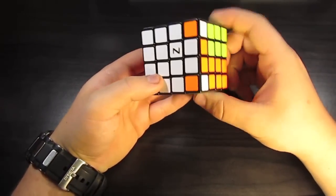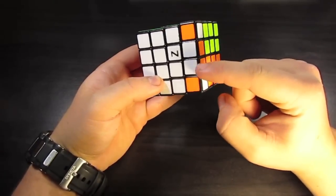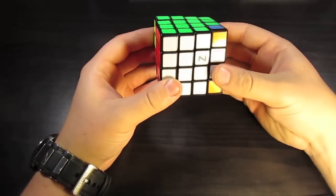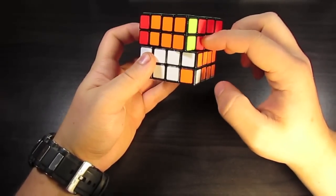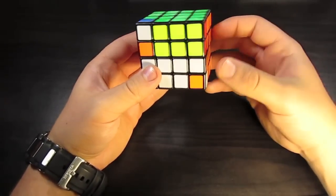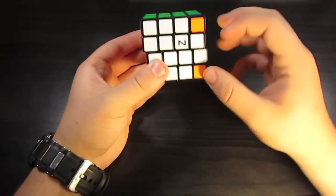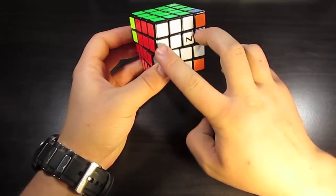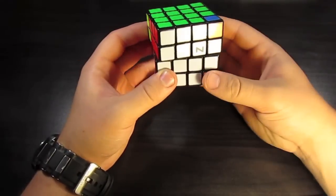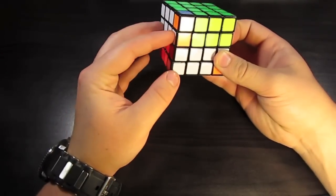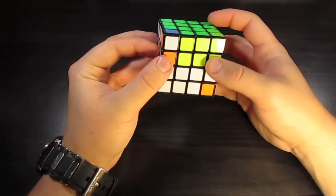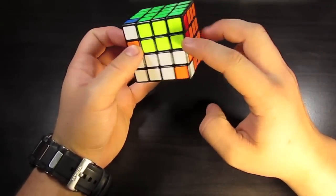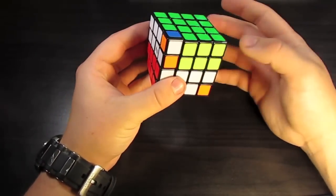So, by doing that, that put the correct one in here, and it messes up this second layer, but it's okay, we know how to solve that with cuboid algorithms. If you see, right here, these two are the same color, what you want to do is you want to put them on the right, and you want to do the algorithm that matches up the rest of the corner pieces. And again, this is a cuboid algorithm.